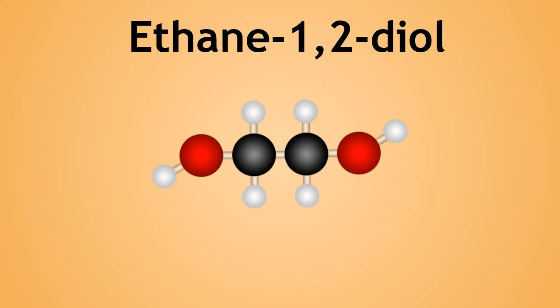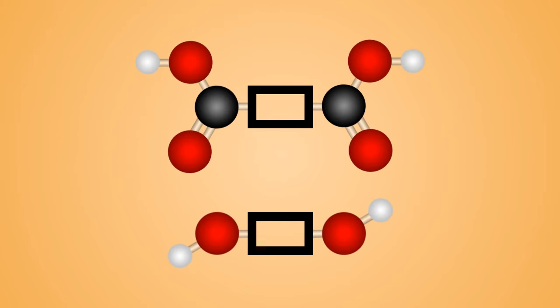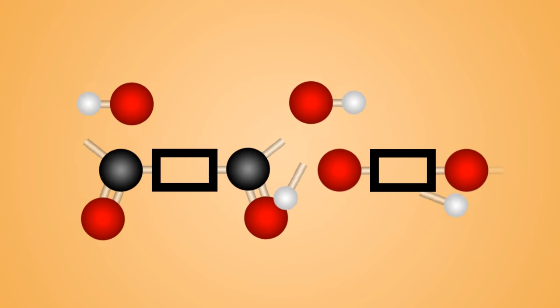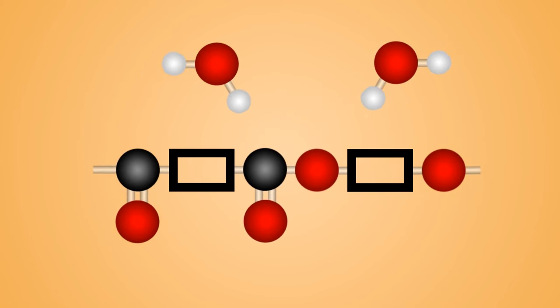Once again, since both these molecules have a long carbon chain that may confuse the overall structure, we will replace them with rectangular blocks. As you can see, when we align the two molecules, a carboxylic acid and alcohol group can react between the molecules.